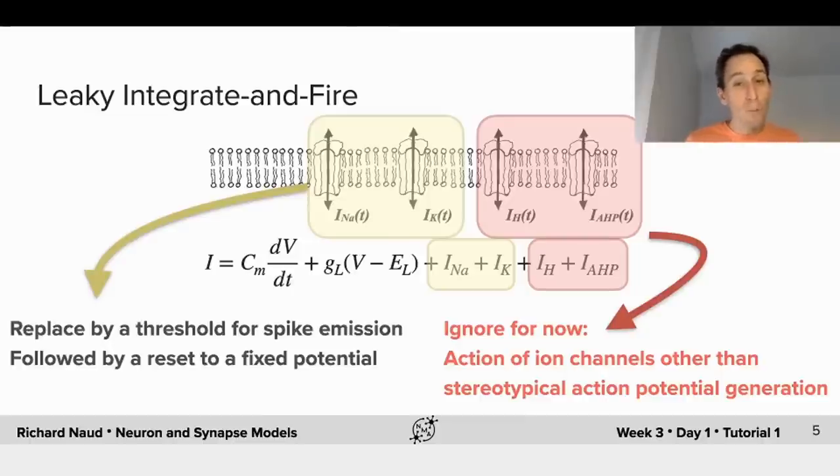And there are also a bunch of other ion channels that are not involved in generating the action potentials. So, the approach of the leaky integrate and fire here is to first ignore those ion channels that are not involved in generating the action potential. But we'll come back to those later.